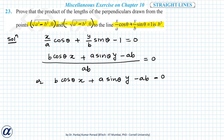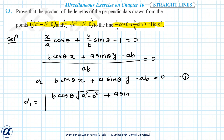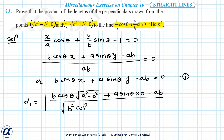Now I have to find the lengths of perpendiculars from two points to this line, which are the perpendicular distances of the two points from the line. I will write the perpendicular distance of the first point — call this line L1. So d1 equals the absolute value of b·cosθ·(√(a²−b²)) + a·sinθ·(0) − ab, divided by √(b²cos²θ + a²sin²θ).